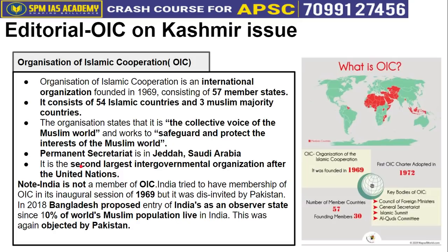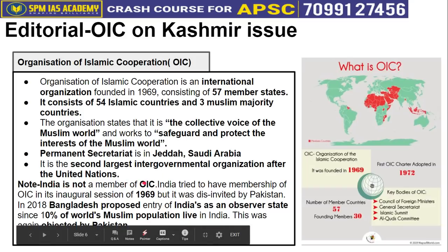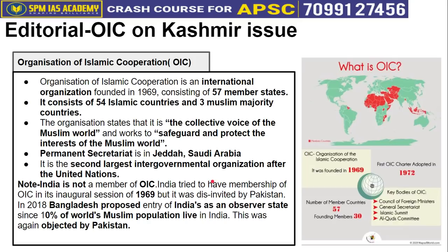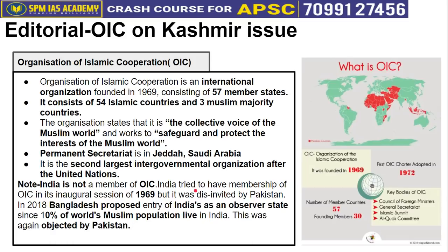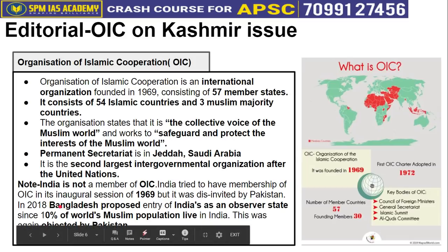OIC is the second largest intergovernmental organization after the United Nations. The UN has 193 member countries, while OIC has 57 member countries. India, having a large Muslim population, tried to join OIC in 1969 itself, but Pakistan blocked India's approach.